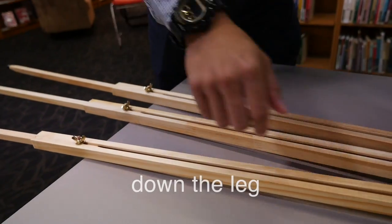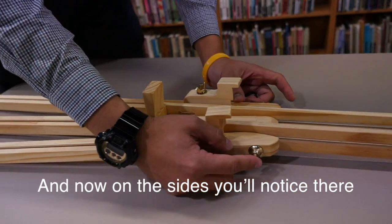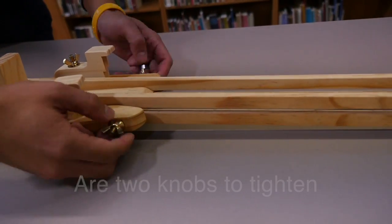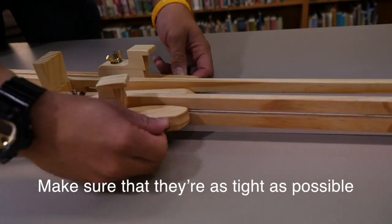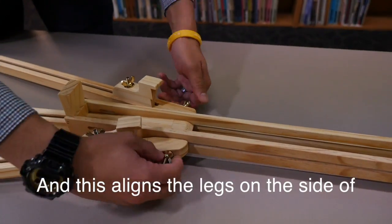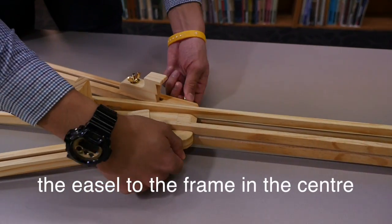Now on the sides, you'll notice there are two knobs to tighten. Make sure that they are as tight as possible. This aligns the legs on the side of the easel to the frame in the center.